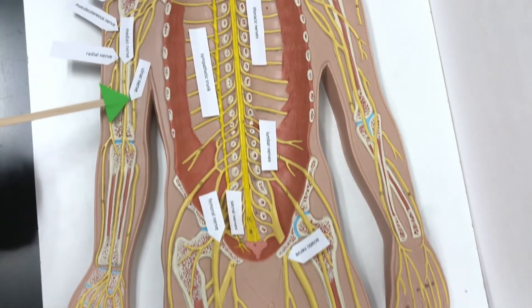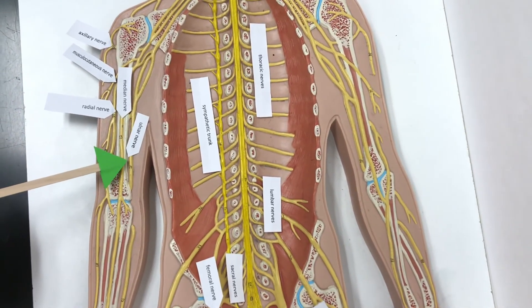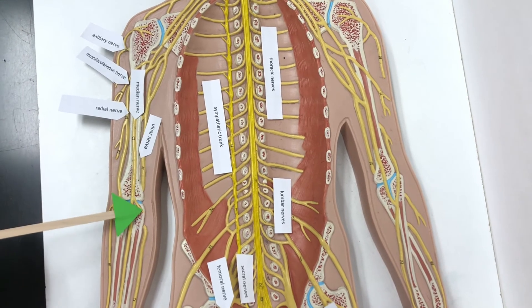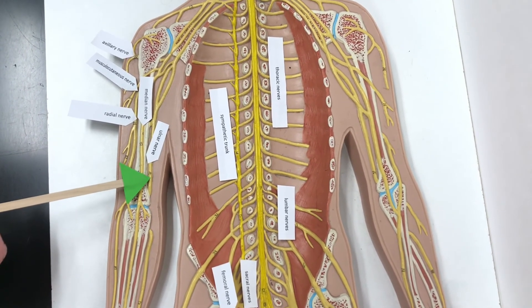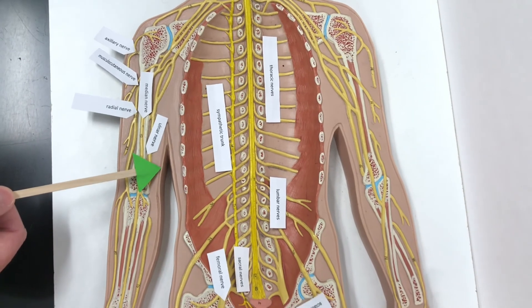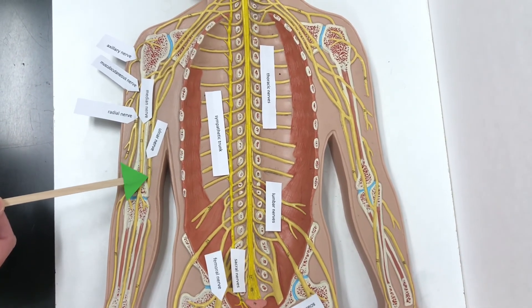We also have the ulnar nerve, which is on the ulna side of the arm. It innervates some of the forearm muscles and the anterior hand muscles.